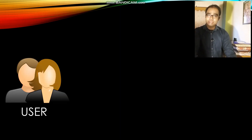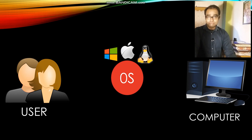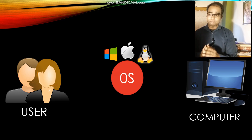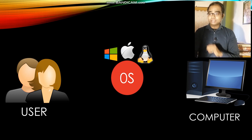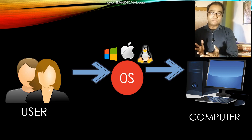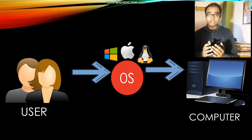See here children, this is the user, and this is the computer. In between the user and the computer, the operating system acts as a link. That's why I have placed the operating system in the middle. Now, if the user has to use the computer, the user has to go through the operating system and then only can work on the computer.